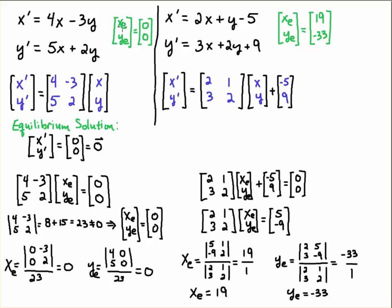For this system on the left, we got an equilibrium solution of 0, 0. So notice that if you put 0 for x primed and 0 for y primed, if I substitute 0 for x and 0 for y, of course, it satisfies that equilibrium solution.